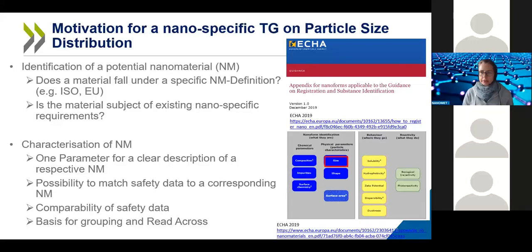Another purpose of the test guideline is to help characterize nanomaterials. Particle size and size distribution can be used as parameters to clearly describe a nanomaterial, help match safety data to a corresponding nanomaterial, compare safety data of different nanomaterials, or provide a basis for grouping and read-across. The need for these parameters is explained in various regulatory guidance, such as the ECHA guidance on registration and substance identification.